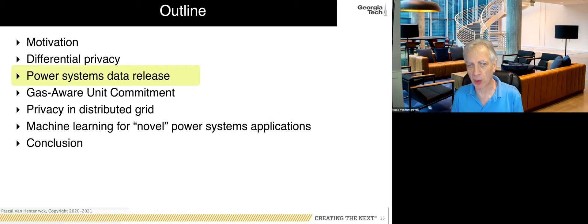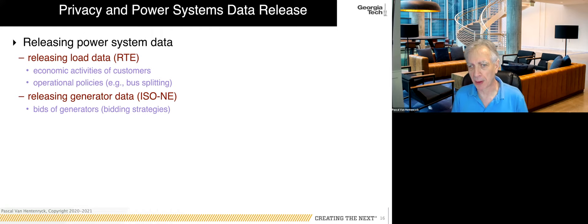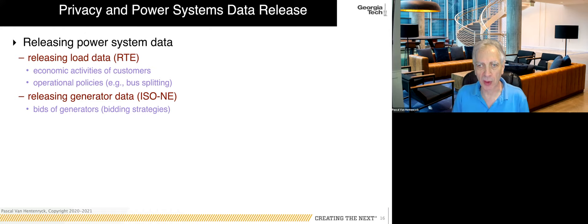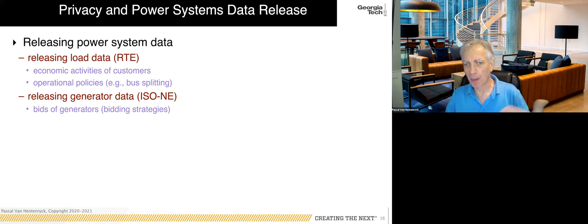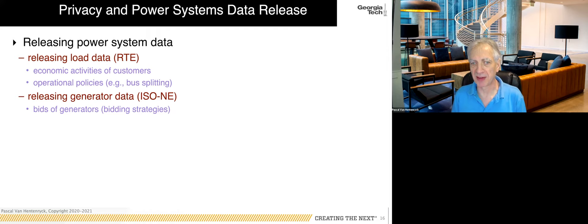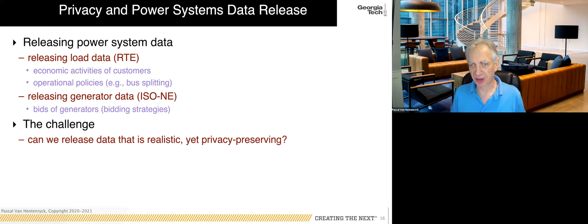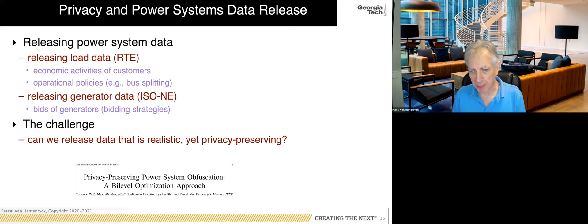The first application is power system data release. It's very difficult to get real power system data for many reasons. For instance, when we worked with RTE, they didn't want to release load data because it reveals customer activity and economic conditions. ISO New England considers generator bids extremely sensitive. The challenge is: can you generate a realistic test case that preserves load and generator data while still providing privacy guarantees?